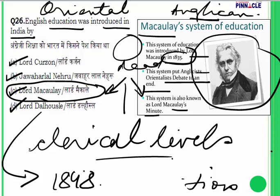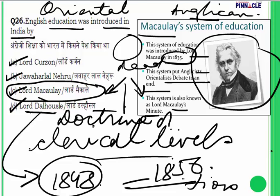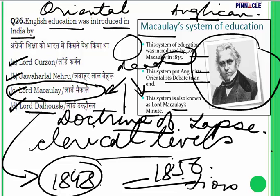Lord Dalhousie's period in India was from around 1848 to 1856. He introduced railways, the telegraph, issued the first stamp, made Shimla the summer capital, and gave the Doctrine of Lapse, which was one of the main causes for the Revolt of 1857. Lord Curzon came around the year 1900 and was responsible for the Partition of Bengal. Question 26 answer: C, Lord Macaulay.